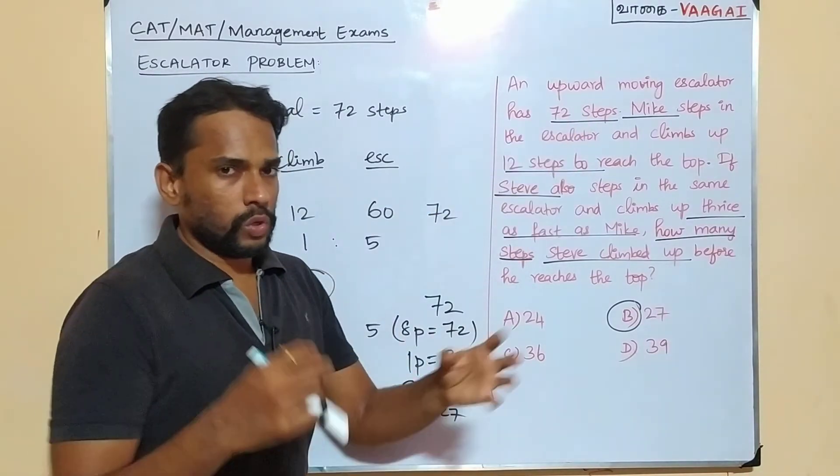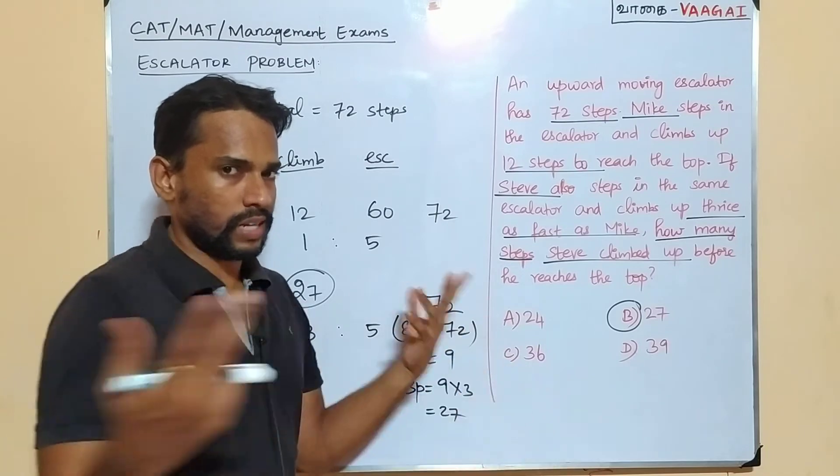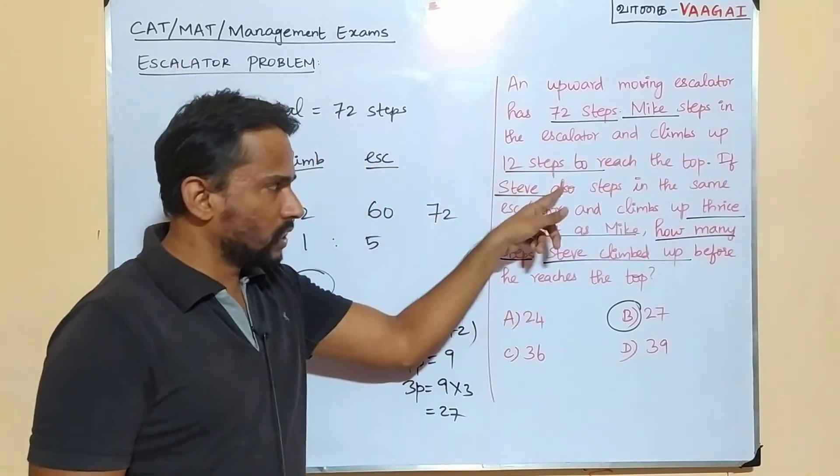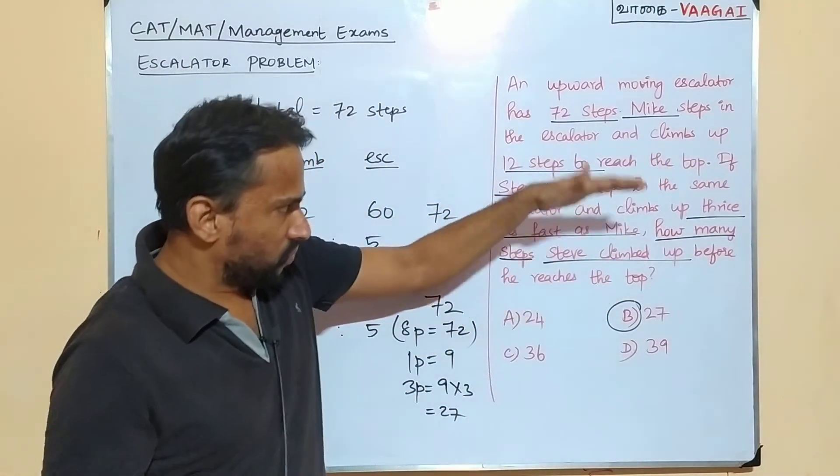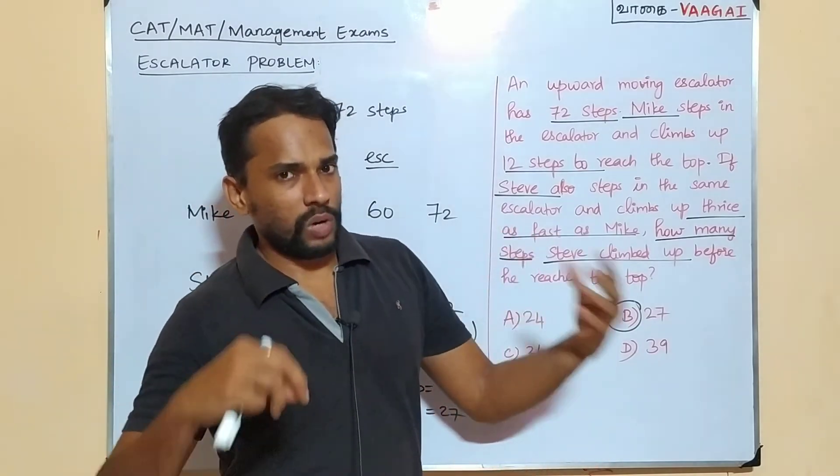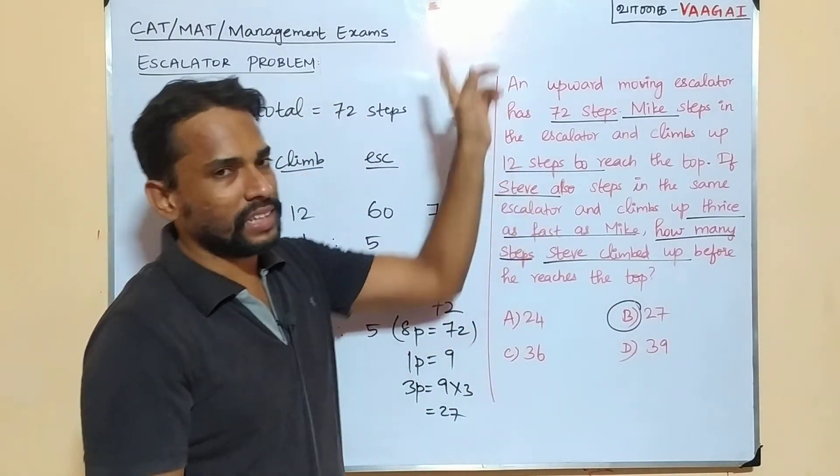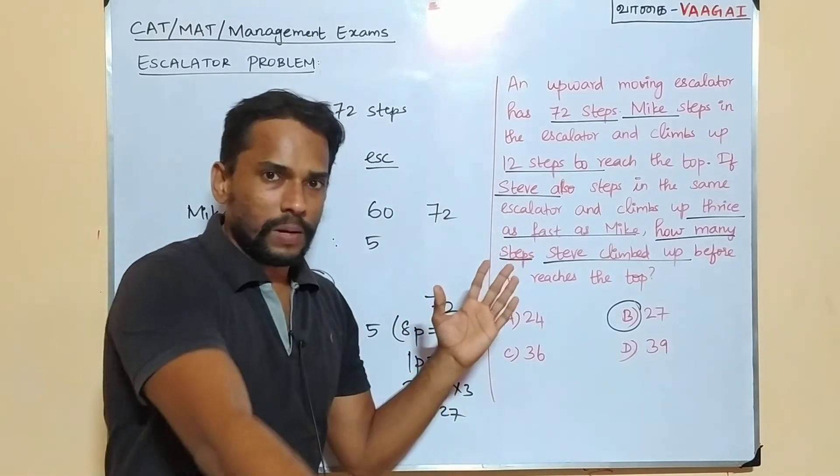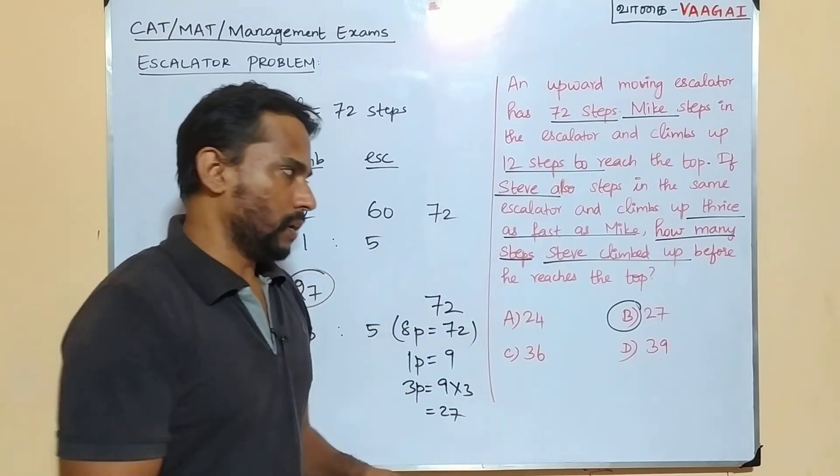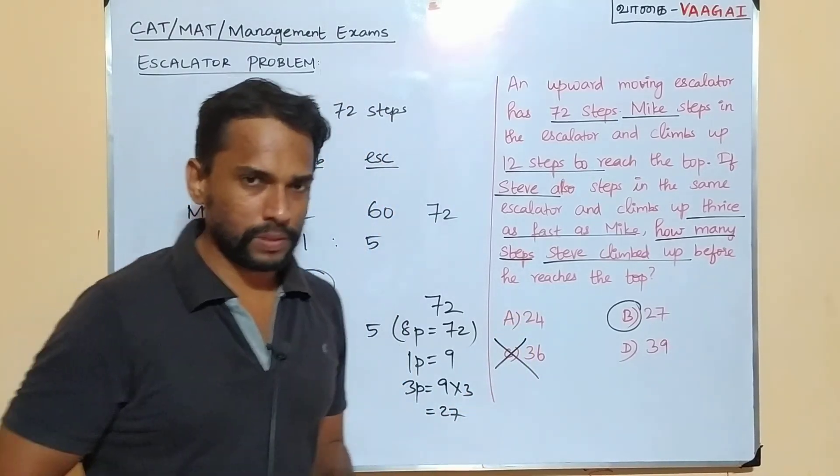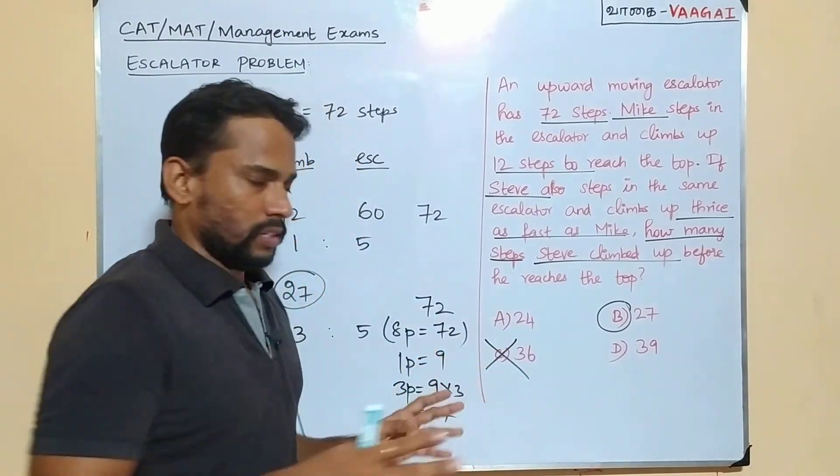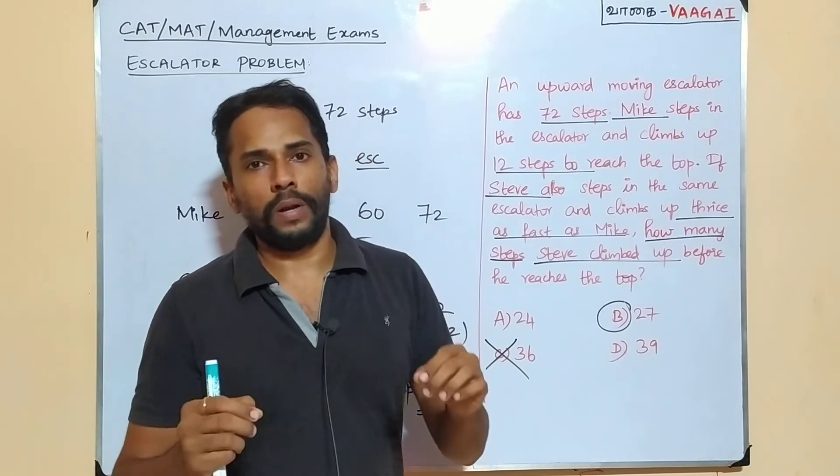Because see here, maybe before you start solving this problem, you yourself would have fallen through this trap. So anyways, we should be very cautious in that. The moment you see the word, Mike can climb up 12 steps, and if Steve is thrice as fast as Mike, the moment that condition is given, most of us would have fallen for that trap because 12 threes are, then Steve could be able to climb up 12 threes are 36 steps. That way also some of you would have approached, but that is completely wrong. And it's an important trap answer purposely they have given that. So we should be very careful and be sure we are not going to attend those trap answers. That's the reason. Anyways, the correct answer is going to be option B 27 is the right answer.